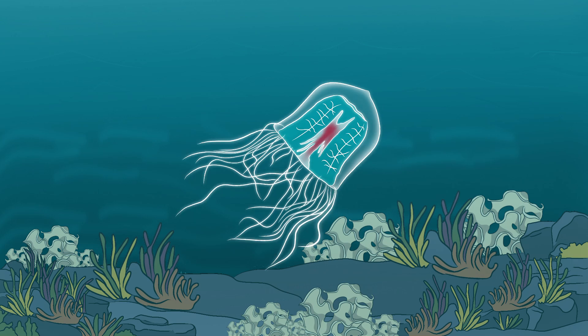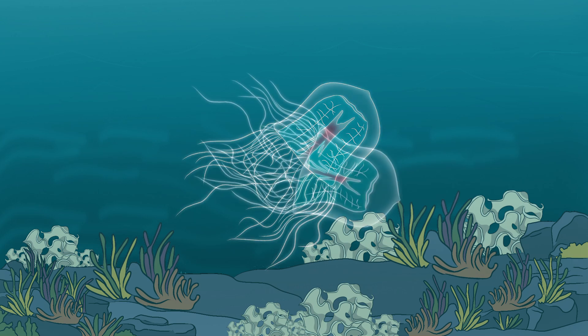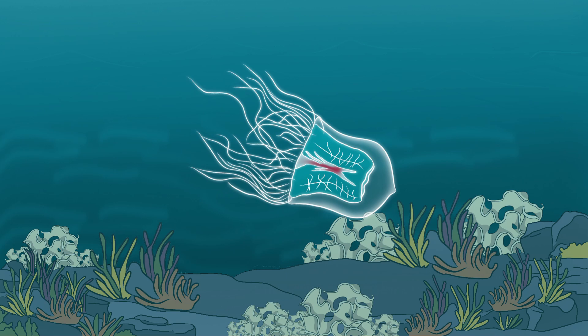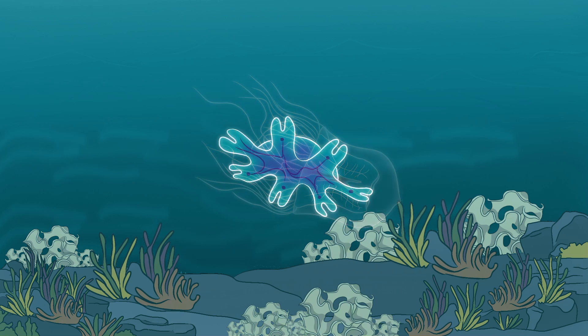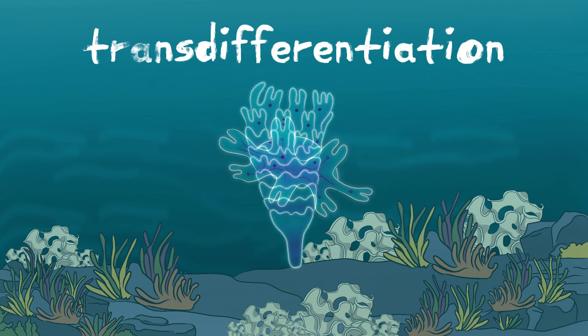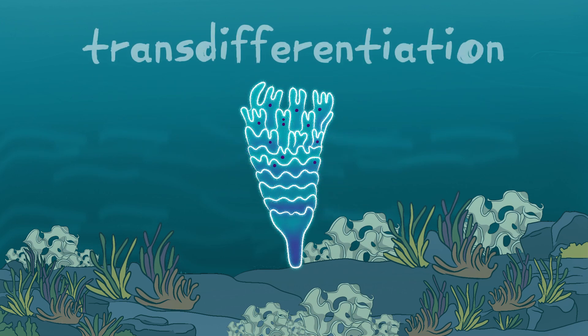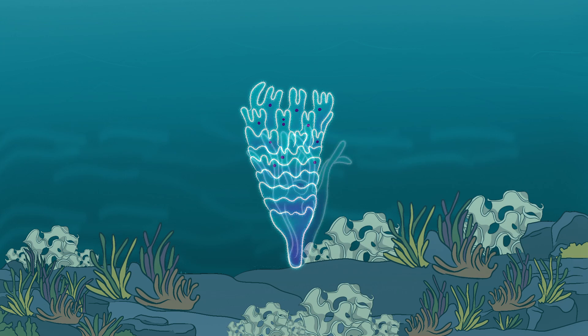When faced with stress, injury, starvation, or even old age, this tiny survivor triggers a remarkable transformation. Instead of dying, it rewinds its biological clock. Through a rare process called transdifferentiation, its cells reprogram themselves, turning back into an earlier form.